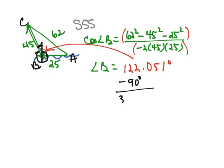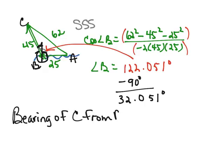We'll come up with 32.051 degrees, which means the bearing of C from B would mean that you would have to go north 32.051 degrees and then turn west.